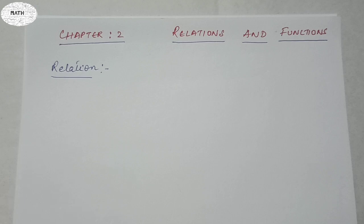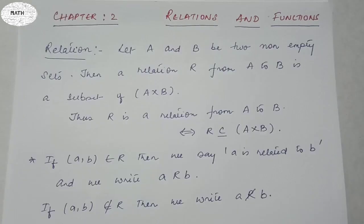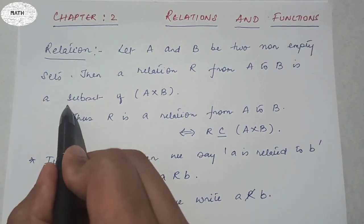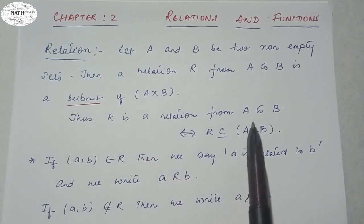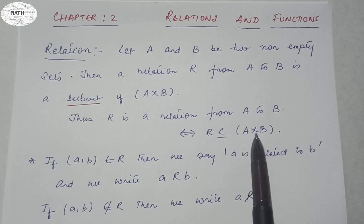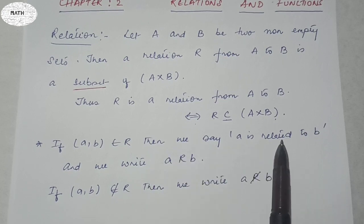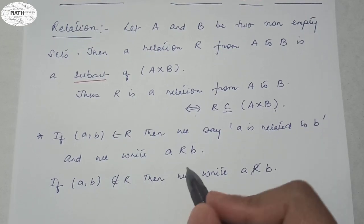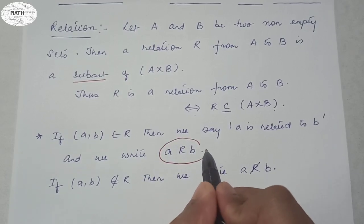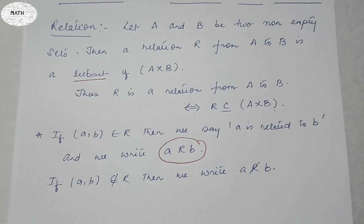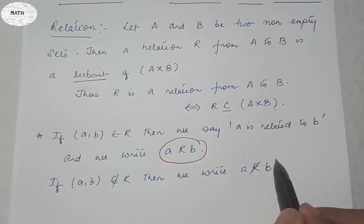A relation is defined as: let A and B be two non-empty sets, then the relation R from A to B is a subset of A cross B. Thus R is a relation from A to B if and only if R is a subset of A cross B. If the ordered pair (a, b) belongs to R, then we say a is related to b, written as aRb. If (a, b) does not belong to R, then we write a is not related to b, denoted by a crossed-R b.